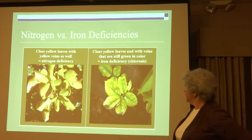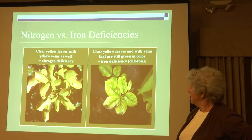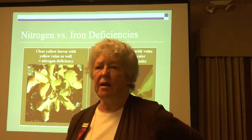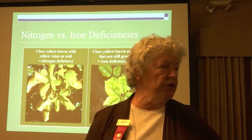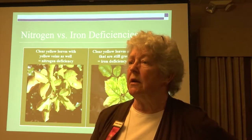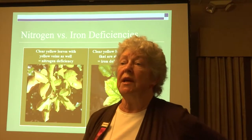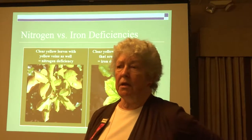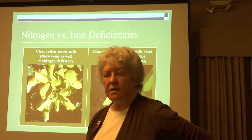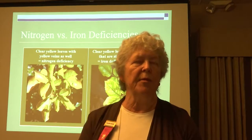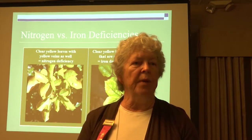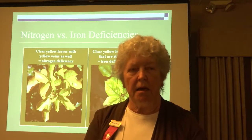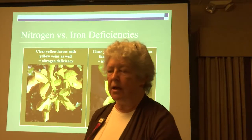Chlorosis — if you think you've got an iron deficiency, get a soil test first unless you're absolutely sure. If you are sure, buy a fertilizer that has chelated iron in it. Chelation is a chemical process that will make the iron dissolve better and not hook up with other elements in the soil.